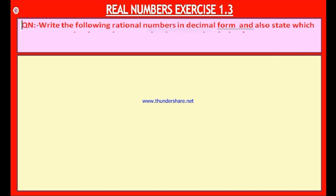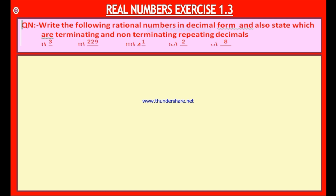Question number 1. Write the following rational numbers in decimal form and also state which are terminating and which are non-terminating repeating decimals.